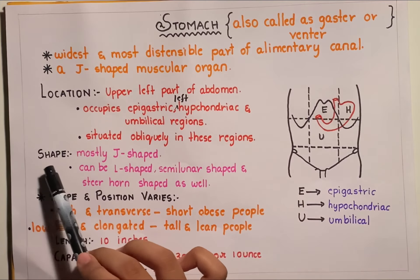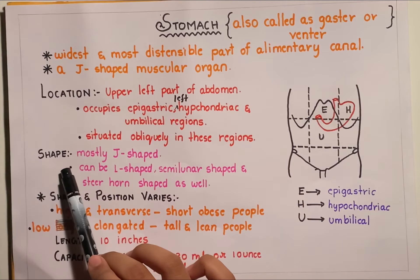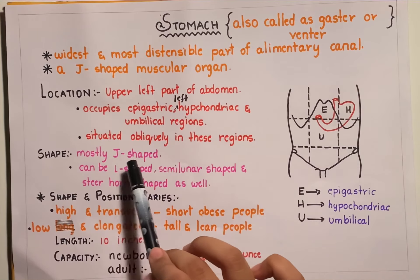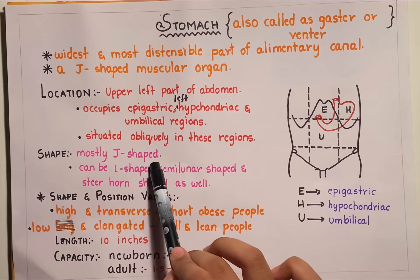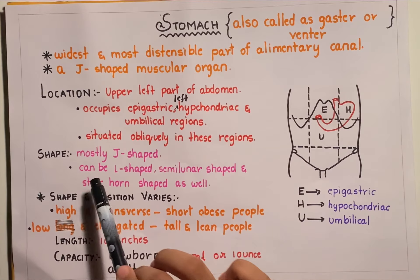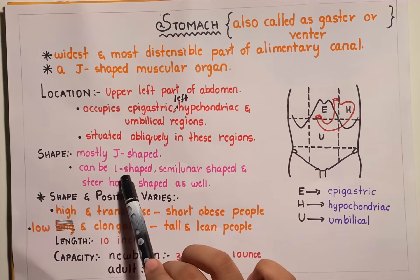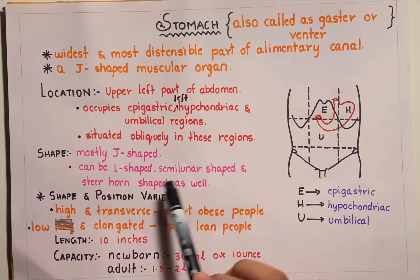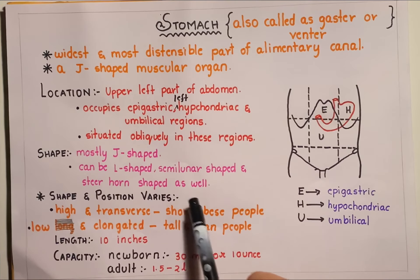Coming to the shape of the stomach, the stomach is mostly J-shaped but it can also be L-shaped, semi-lunar shaped, and steer horn shaped as well.